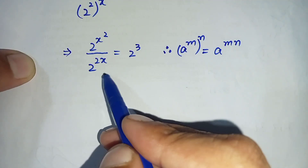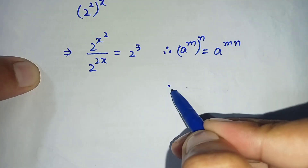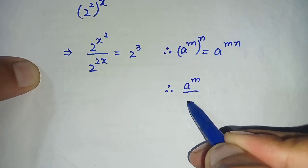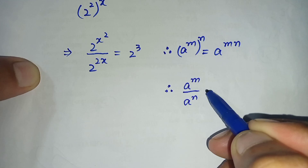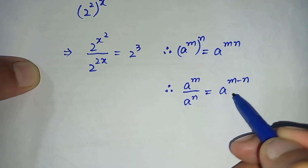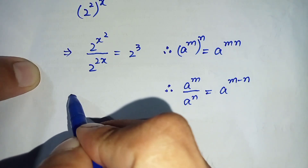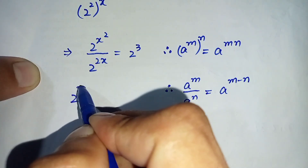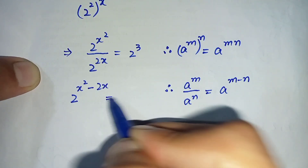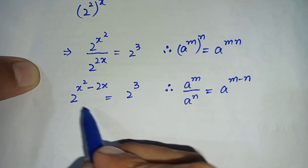Here on the left hand side we again use an exponential formula: a raised to power m divided by a raised to power n is equal to a raised to power m minus n. So by using this formula the left hand side of this equation will become 2 raised to power x squared minus 2x, is equal to 2 raised to power 3.